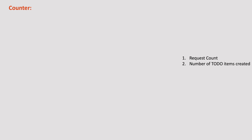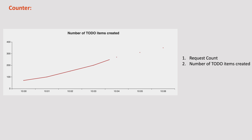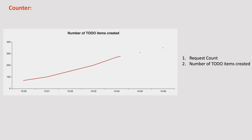When we need to count the number of occurrences of a particular event like the number of requests received or the number of to-do items created, the Counter type metric is used. A Counter value can only increase or be reset to zero on application restart. So whenever we need a metric to be recorded and we are sure it always goes up, then we should use Counter type.